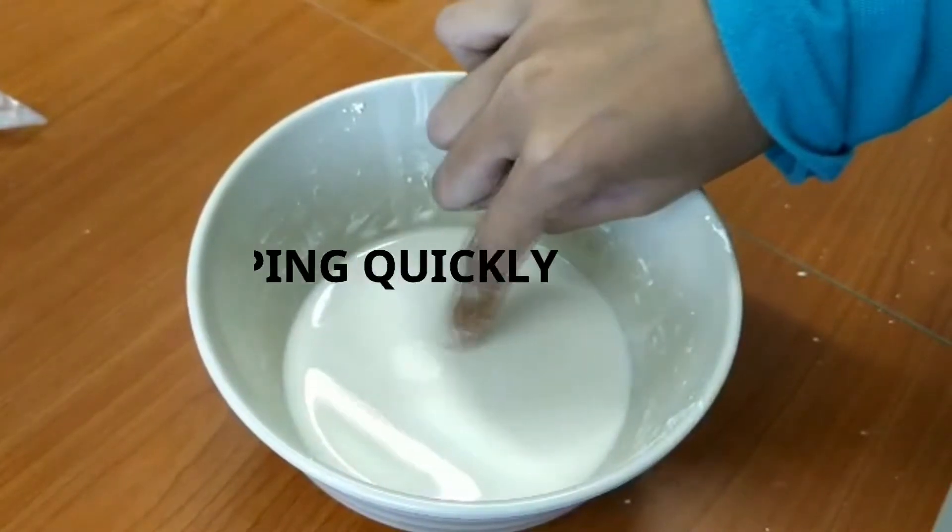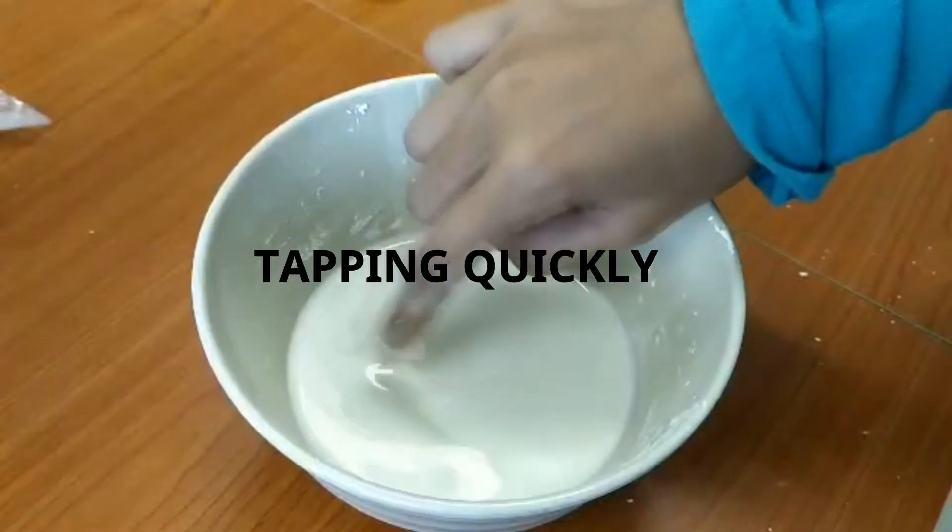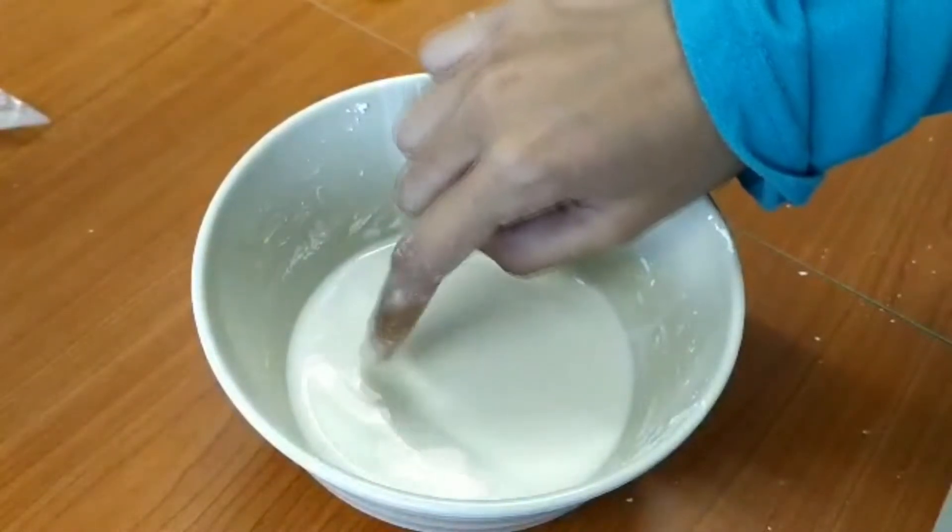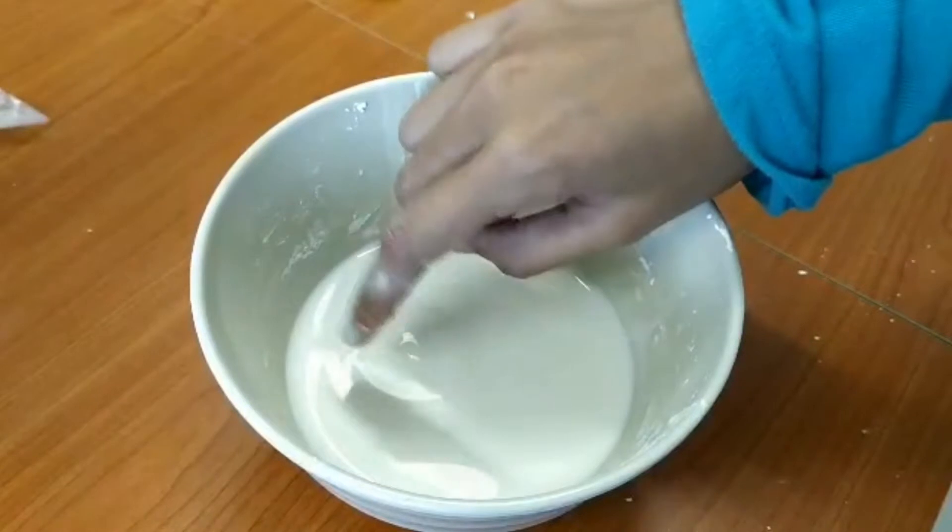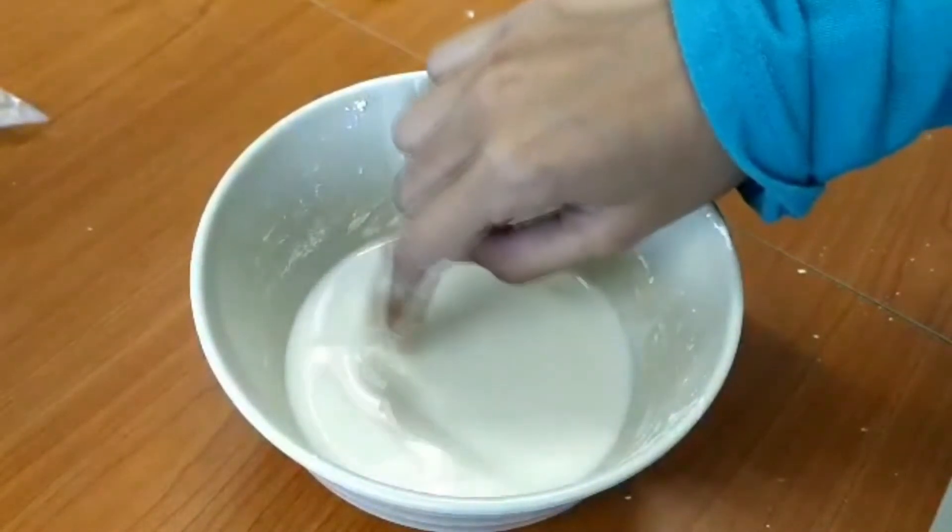When I tap it quickly, I can't really break the surface, but when I poke it very slowly, my fingers sink into the substance with ease. This is because when tapping quickly, I am applying a high velocity over a short distance which will result in very high shear stress. This will make it difficult to break the surface.